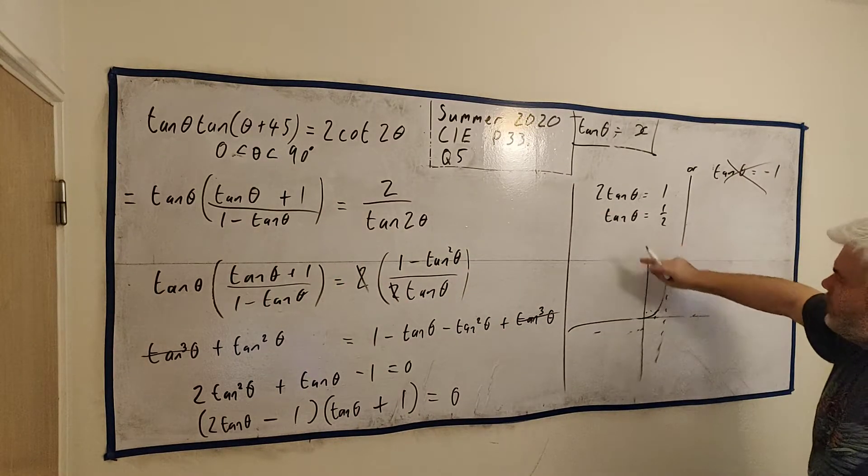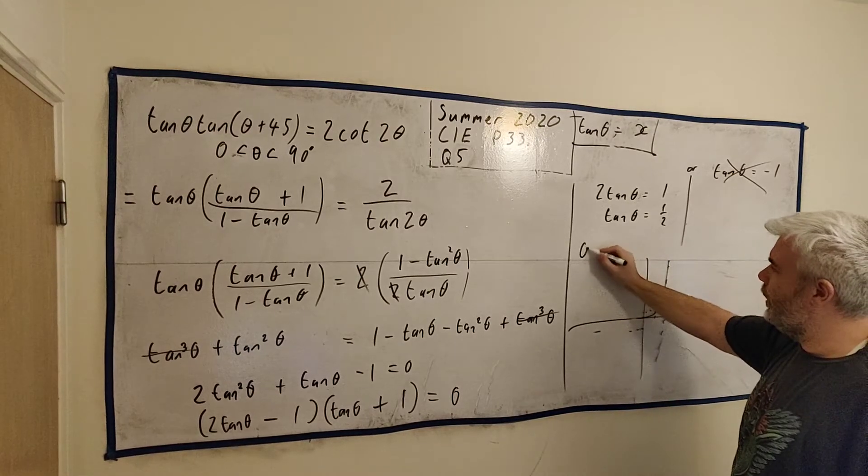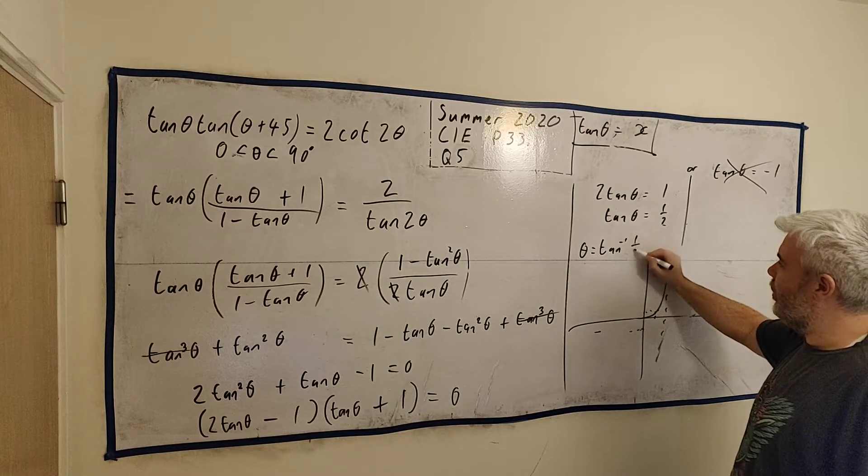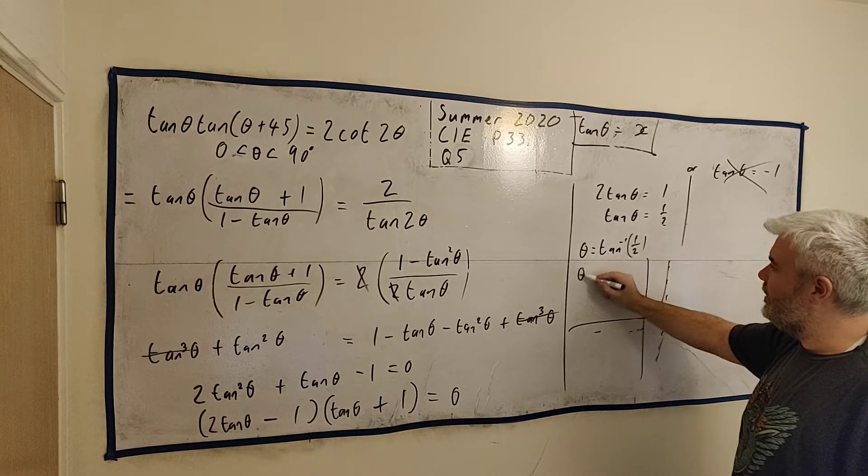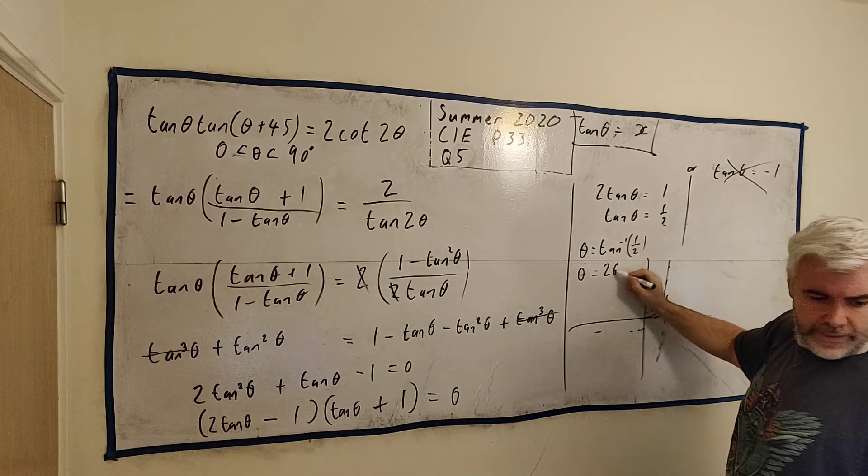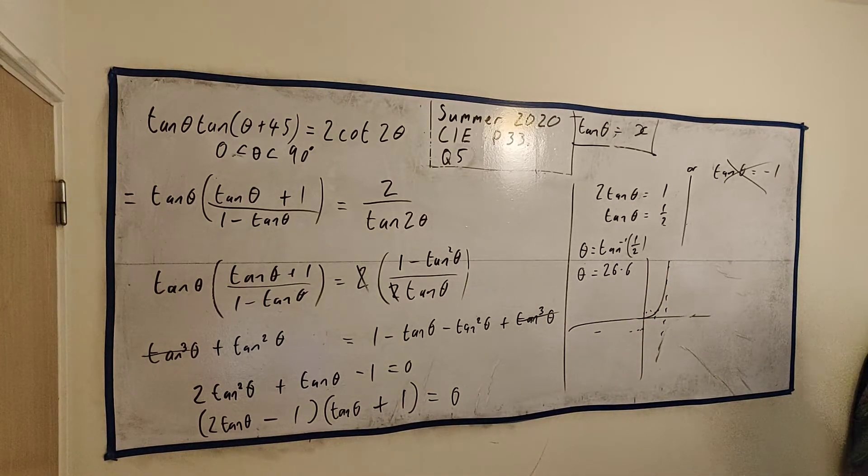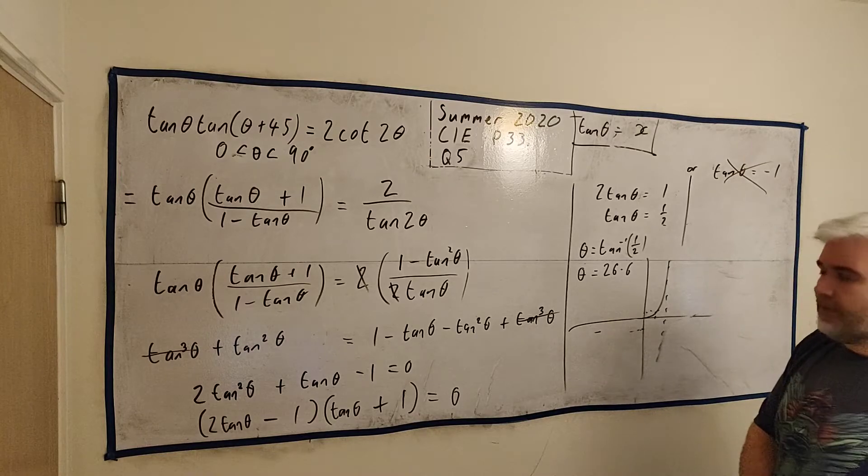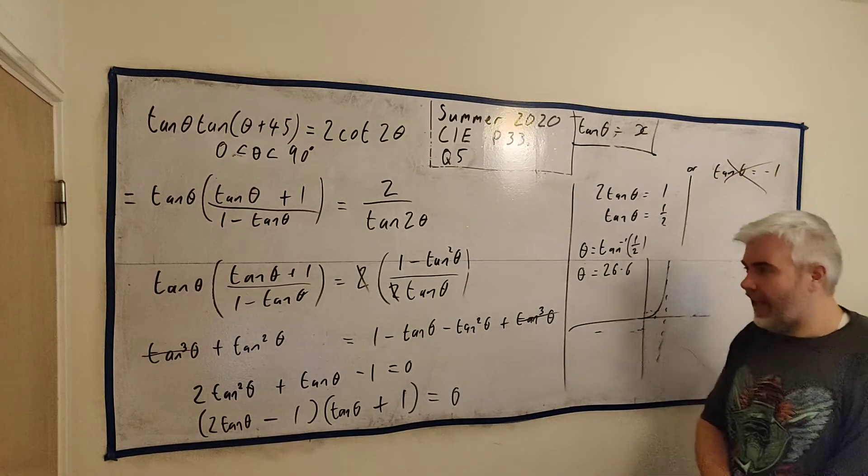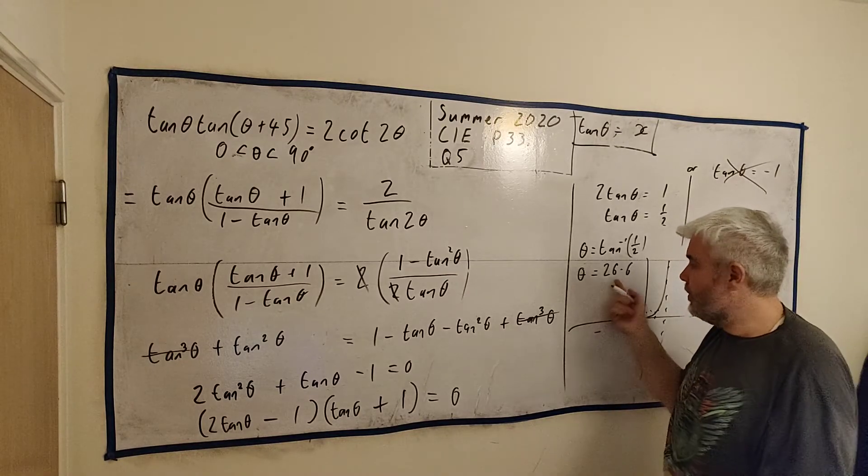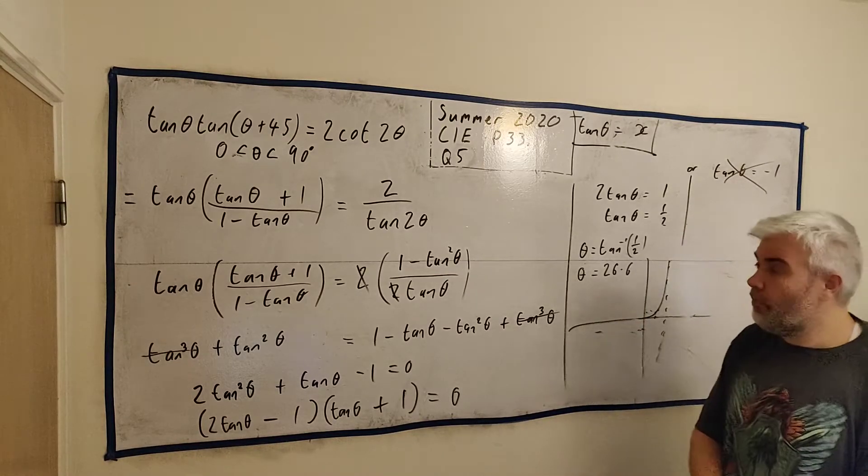so this one here we can go ahead and ignore it and we'll solve for this put that in a calculator we'll get θ is equal the inverse tangent of a half let me write it down the inverse tangent of a half and that is θ is equal 26.6 I think yes 26.6 that's it that's the answer the question answered and if you gave the two answers you would lose a mark even if this one's correct you would lose a mark they only wanted the one answer